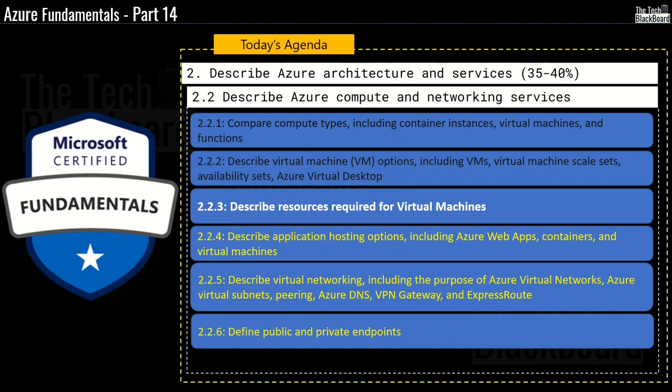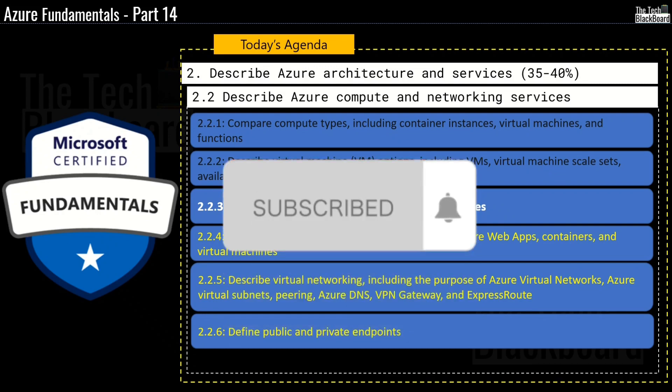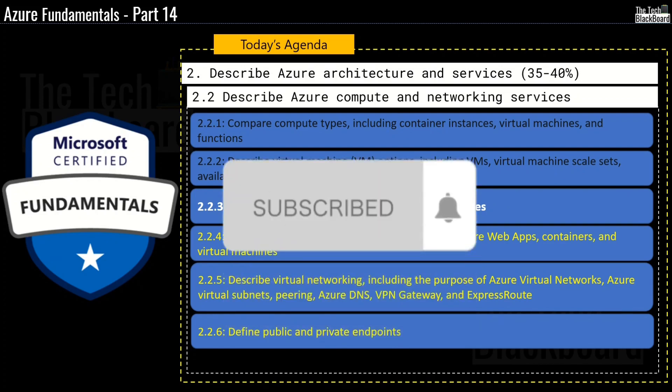Then we will cover section 2.2.5, which is to describe virtual networking including the purpose of Azure virtual networks, Azure virtual subnets, Azure DNS, VPN gateway and ExpressRoute, and also define public and private endpoints. Please do consider subscribing to the channel as we bring a lot of quality content on Azure and its certifications that would surely assist you in shaping up your cloud career.